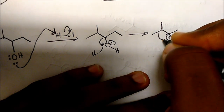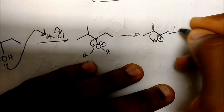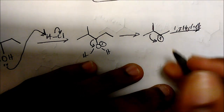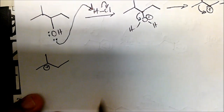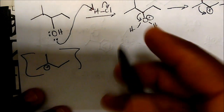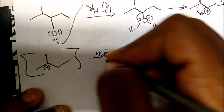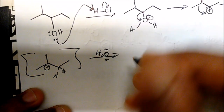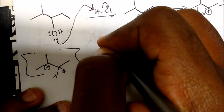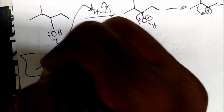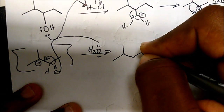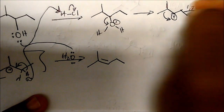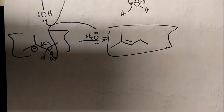Rearrangement — we could get this to be a tertiary carbocation by a hydrogen shifting down. This will be a 1,2-hydride shift. We get the intermediate with the plus charge here. Then simply the water molecule that just left comes in, acts as a base. We're predicting a major product — the Zaitsev product, not the Hofmann product. The electrons on the oxygen come in, take out the hydrogen, and these electrons kick in to form your neutral alkene product. Anytime you have an alcohol in the presence of an acid, that's your classic E1 reaction.